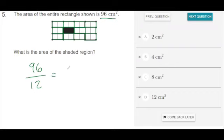And 96 divided by 12 is 8. So that means one rectangular part, which happens to be the area of the shaded region, is equal to 8 centimeters squared.